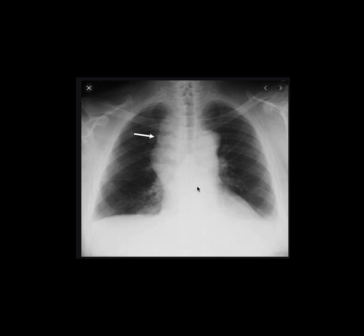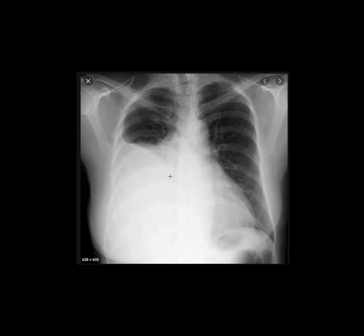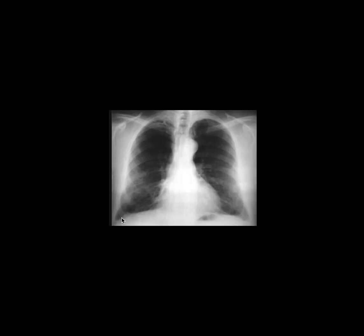Even here in the mediastinum, you can see slight haziness around the heart, suggesting pleural effusion. Again here, you can see that a lot of the lung has been involved — the pleura has become hazy, and the costophrenic angle on one side of the lung has completely disappeared. Another example: again the pleura is hazy and the costophrenic angle becomes hazy.